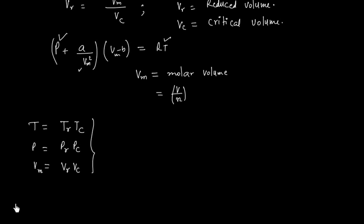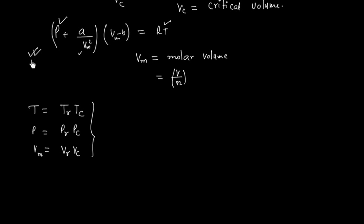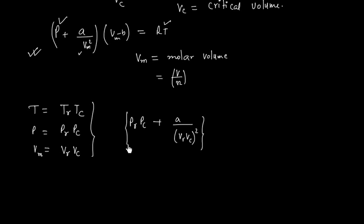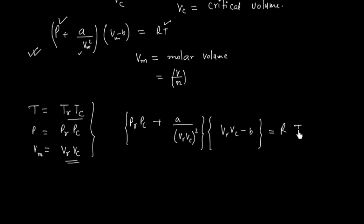If we plug these three values into the Van der Waal equation, we will have (PR·PC + A/(VR·VC)²)(VR·VC - B) = R·TC·TR, where TC times TR replaces temperature.